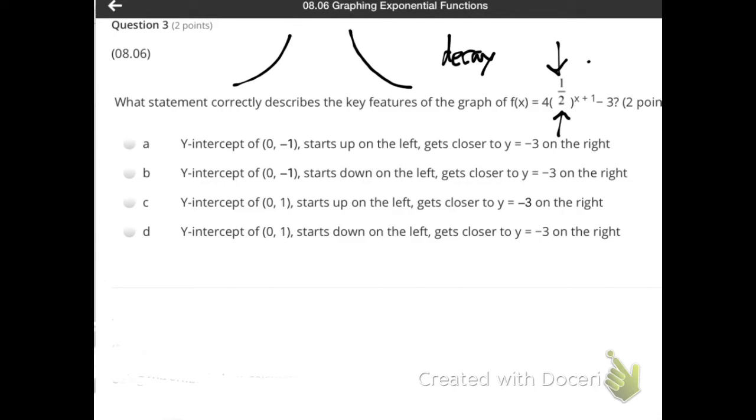Now, if you have a number up here in your exponent along with your x, that shows that it's going to do a horizontal shift. It's going to go to the left or to the right. And just like any other thing, if it's grouped with the x, if it's up there with the x, it's going to do the opposite of what you think it does. So even though there's a positive one, it's going to go to the left one.